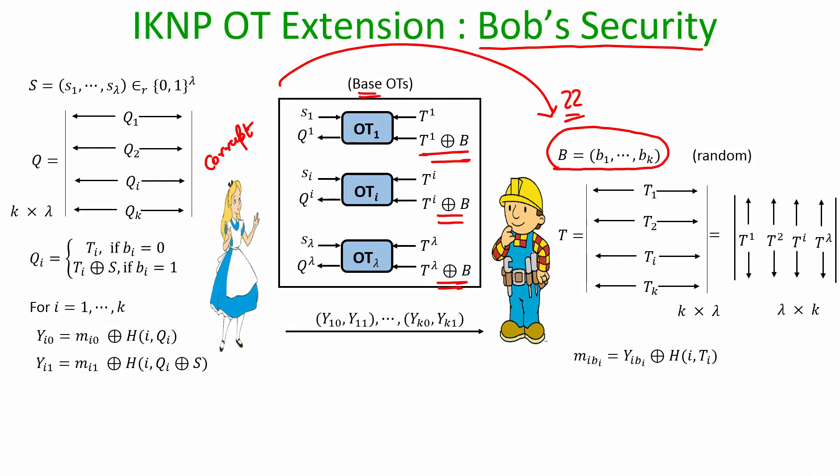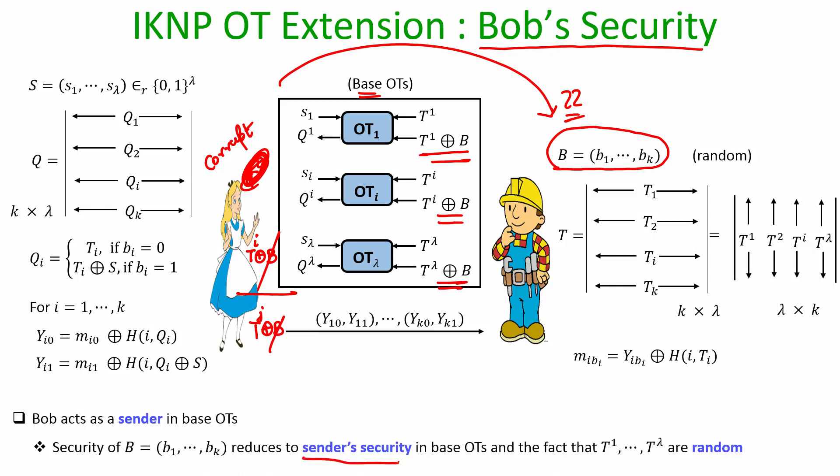Now the sender's security in the base OTs ensures the following: either Alice will receive the ith column or she will receive the ith column XORed with B. But if she is receiving the ith column XORed with B, she would not be learning the ith column. For the jth OT, she will be learning the jth column or the jth column XORed with B. So even if she XORs these two things, she learns basically XOR of two random columns which is completely independent of the actual choice vector of Bob. So that is why the sender's security of base OT ensures that nothing about Bob's choice vector B is learned and the fact that each of the columns of the T matrix are picked randomly.